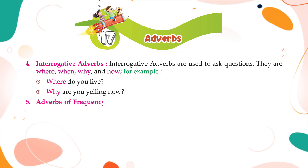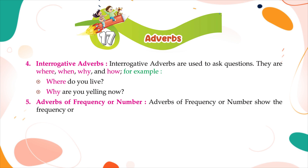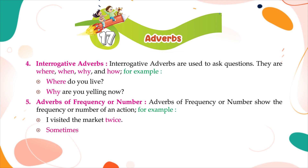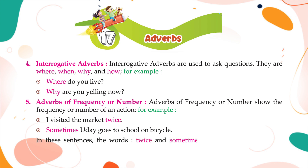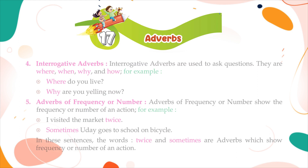Adverbs of frequency or number show the frequency or number of an action. For example: 'I visited the market twice.' 'Sometimes, Uday goes to school on bicycle.' In these sentences, the words 'twice' and 'sometimes' are adverbs which show frequency or number of an action.